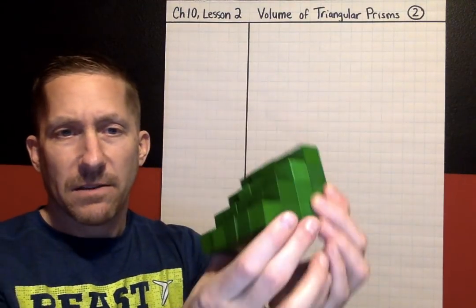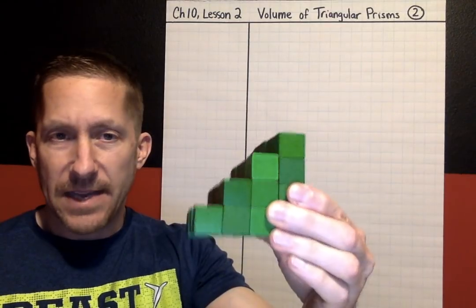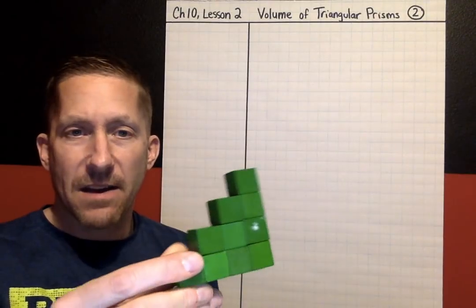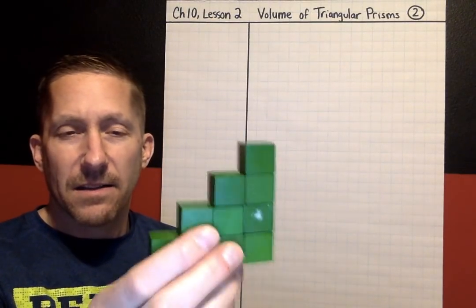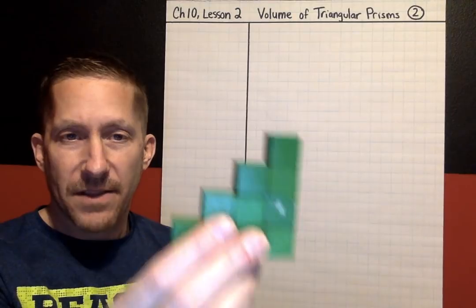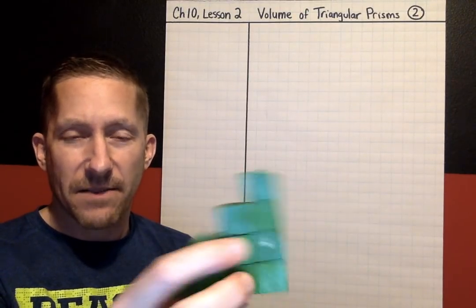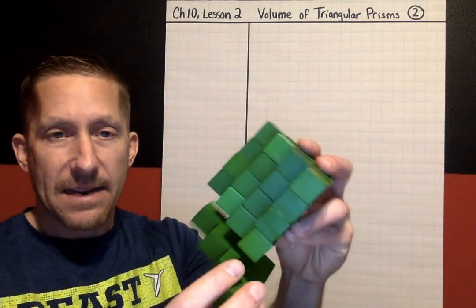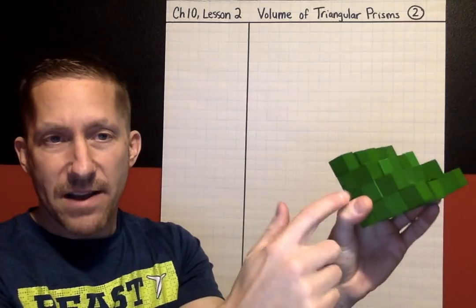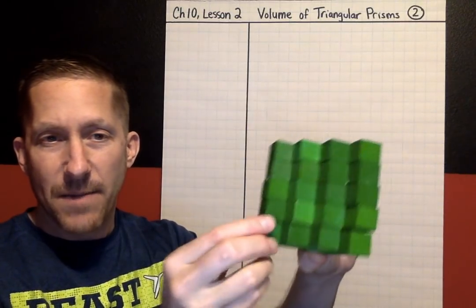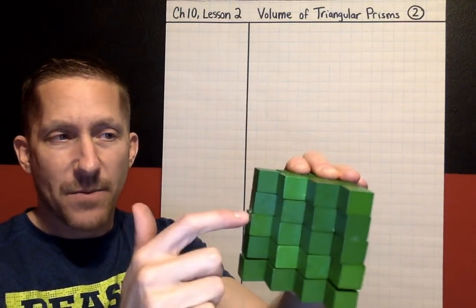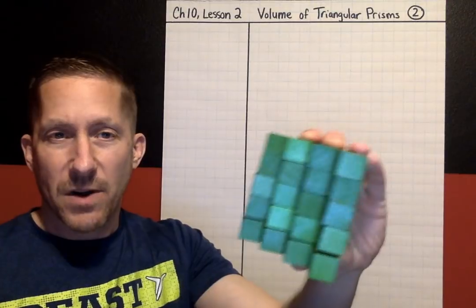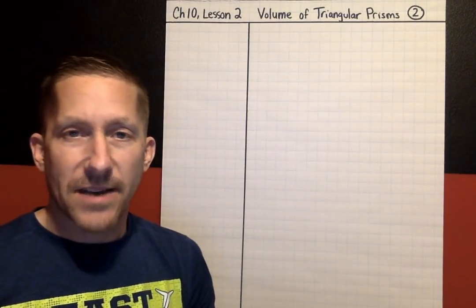The idea we're going to look at today is: if you have a triangular prism like this, the first thing you're going to do is find the area — I'm going to take off just one layer — you're going to find the area of this bottom triangle. How many squares does it take to make the bottom? And then you're going to multiply the area of the base times how many layers, or the height of the overall triangular prism. That's the strategy we're going to use today.